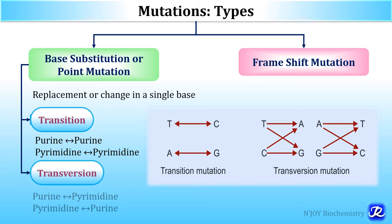What is transversion? In transversion, there is a change from a purine to either of the two pyrimidines, or a change from a pyrimidine to either of the two purines. For example, change from thymine to adenine or guanine, or change of cytosine to adenine or guanine, or change of adenine to thymine or cytosine, or change of guanine to thymine and cytosine. So, point mutation is of two types: transition and transversion.